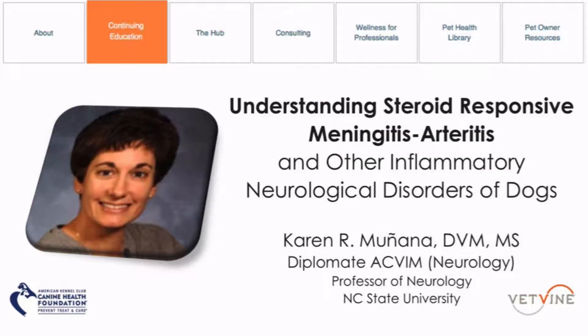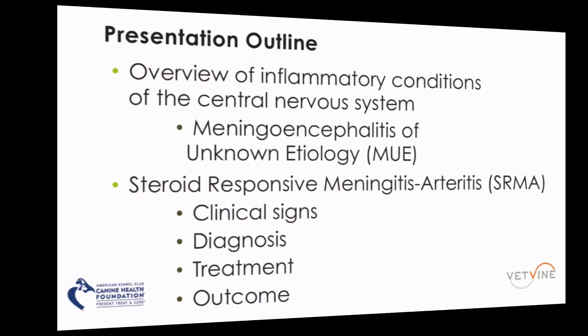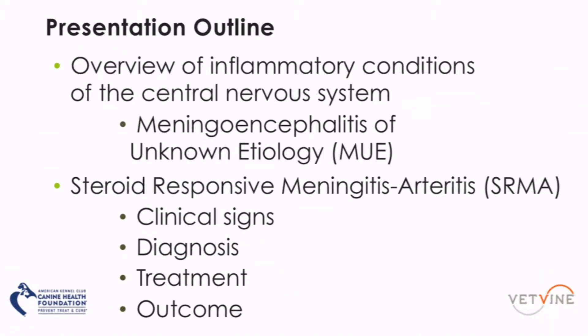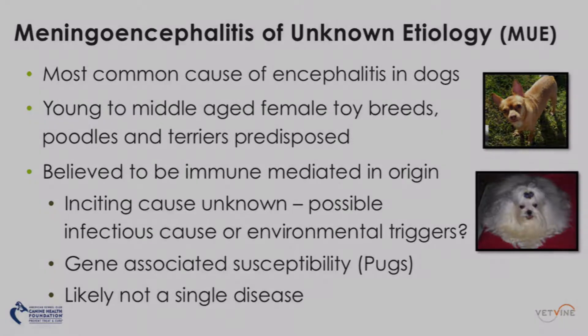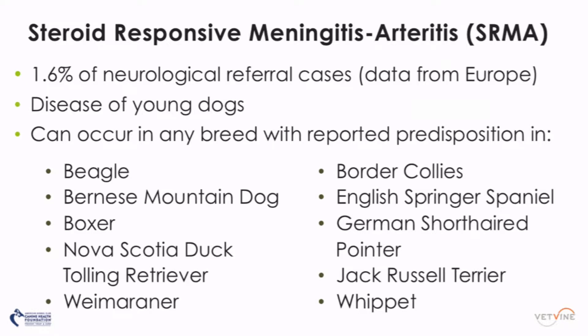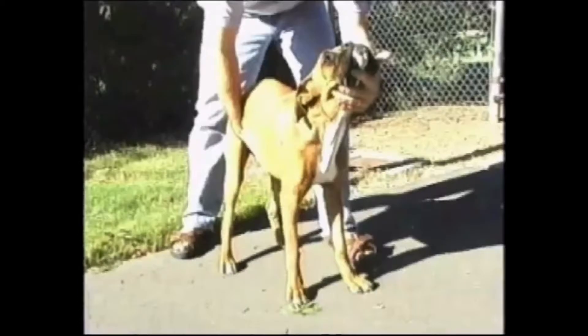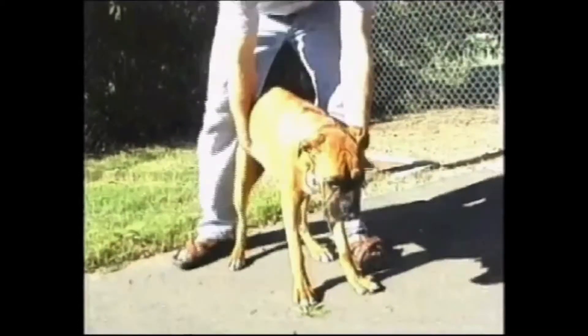The topic of this seminar is Inflammatory Disorders of the Central Nervous System of Dogs, with a particular emphasis on steroid-responsive meningitis arteritis. As a general outline, I hope to provide an overview of inflammatory conditions of the central nervous system in general. I will spend a little bit of time talking about the most common inflammatory CNS condition we see in dogs, called Meningoencephalitis of Unknown Etiology, or MUE. The focus of the presentation will be steroid-responsive meningitis arteritis, and we will discuss the clinical signs, method of diagnosis, treatment, and expected outcome with that disorder.